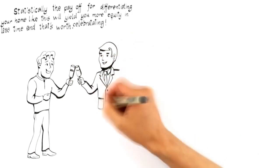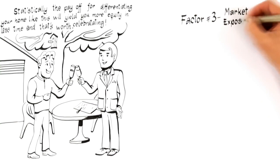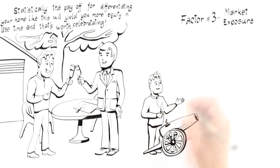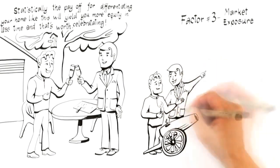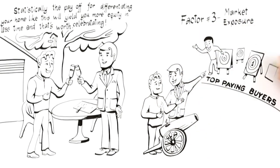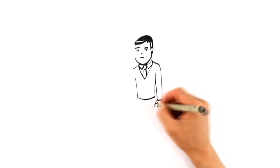Moving on to factor number three, market exposure. Once your home has been differentiated to target top-paying buyers like a loaded cannonball, it's ready to fire. But this next factor ensures when you launch your home onto the market, it's aimed at the right target. This requires you to be especially careful when selecting a professional. Here's why. Exposing your home to the market requires marketing.